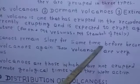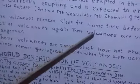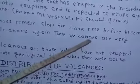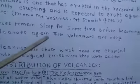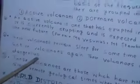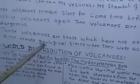The second type is dormant volcanoes. These volcanoes remain sleeping for some time before becoming active again. These volcanoes are very dangerous because they sleep for some time but the eruption may happen at any time. So these are considered very dangerous as far as volcanoes of the world are concerned.